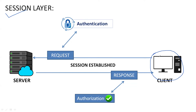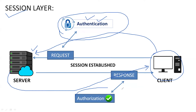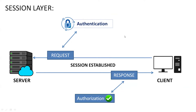A client wants to access data from a server. The client forwards a request to the server, and the server asks for the username and password to verify if the user is valid. The client provides the credentials, and before responding, the server checks how many permissions are allowed — that is called the authorization process.